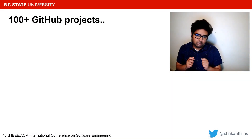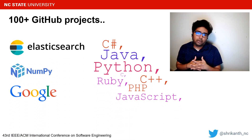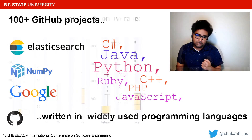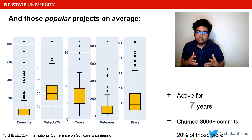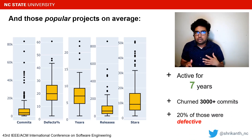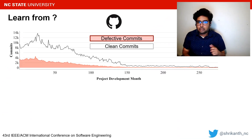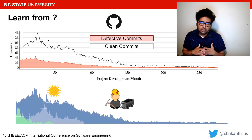To assess those sampling policies, we mined numerous popular GitHub projects being developed for widely used applications. These are non-trivial engineering projects written in widely used programming languages. Those projects are long-running — 20% of their commits on average are defective and they churn over 3000 commits. Before we could assess the sampling policies, we wanted to visualize the commits across all the projects we mined, essentially to identify the information-rich region.